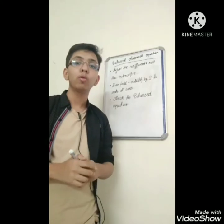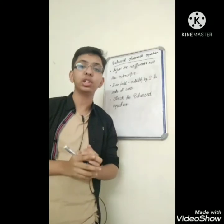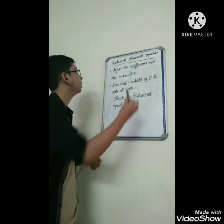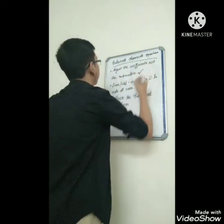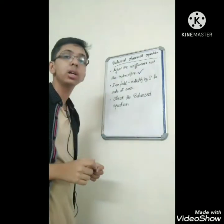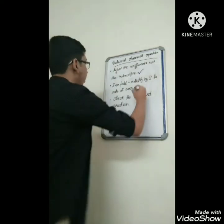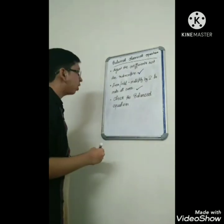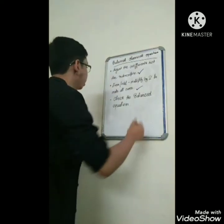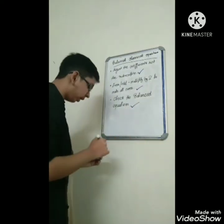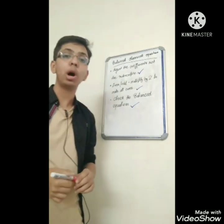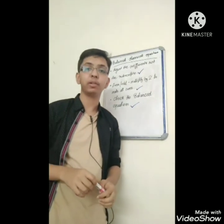For balancing any chemical equation, you need to know these 3 points. First, adjust the coefficient, not the subscript. Second, even or odd — multiply by 2 to make all even. Third, check the balanced equation. Now we need to know how to balance any chemical equation.